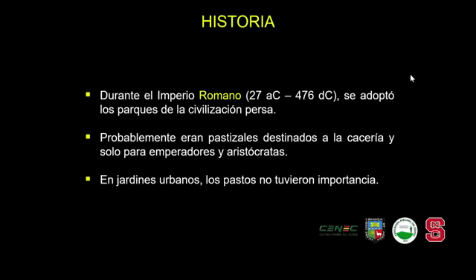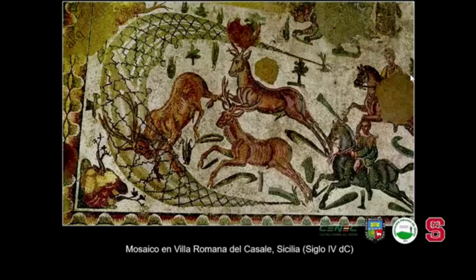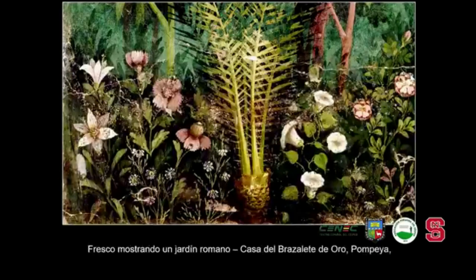Sin embargo, es el inicio también de los jardines en Roma. La civilización romana creció enormemente, ocupó casi toda Europa, parte del norte de África y de Asia, y con su gran riqueza los jardines privados también se desarrollaron por primera vez. Hay una imagen de un mosaico de un parque de caza y también una imagen de los jardines que existían en Pompeya, un fresco pintado en la casa del Brazalete de Oro, donde se observan los jardines pero sin la presencia aún de pasto como elemento ornamental.